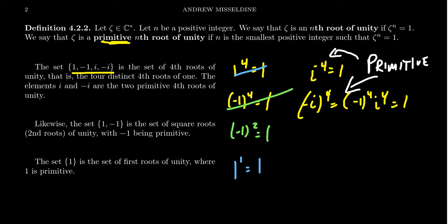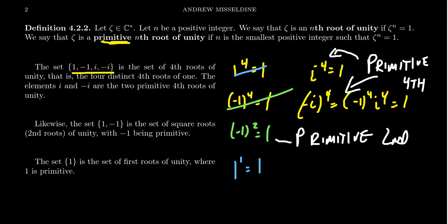Conversely, the set {1, negative 1} consists of the square roots of unity, or second roots of unity. 1 squared is 1, and negative 1 squared is 1. As we saw, negative 1 is a primitive second root of unity. So primitivity depends on the degree: i and negative i are primitive fourth roots, negative 1 is a primitive second root of unity, and 1 is a primitive first root of unity — in fact the only first root of unity.